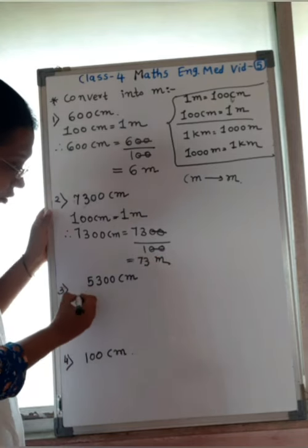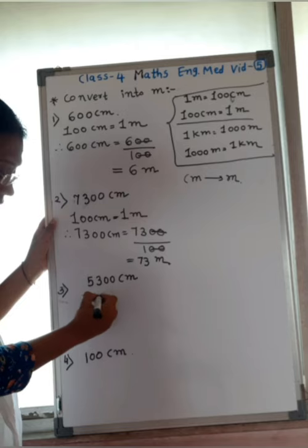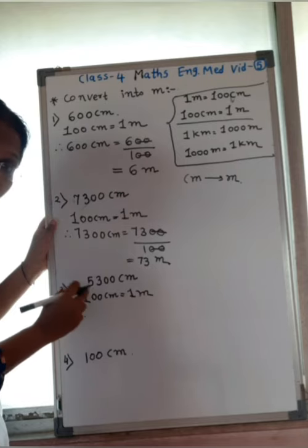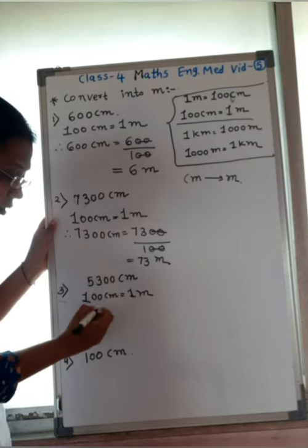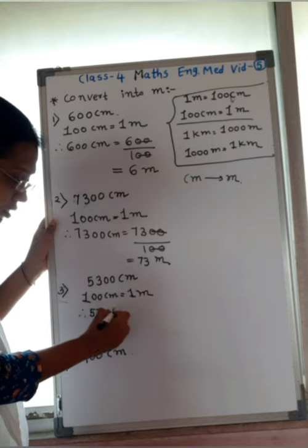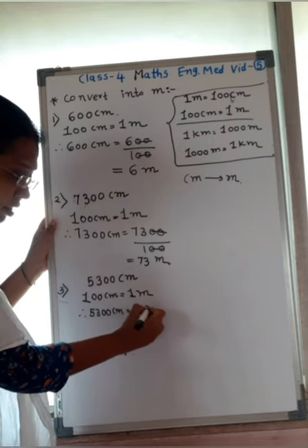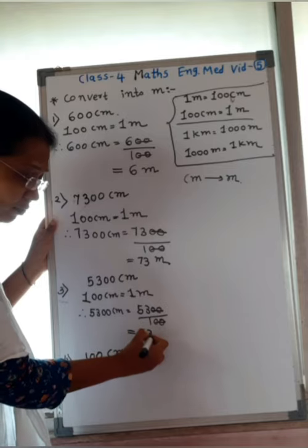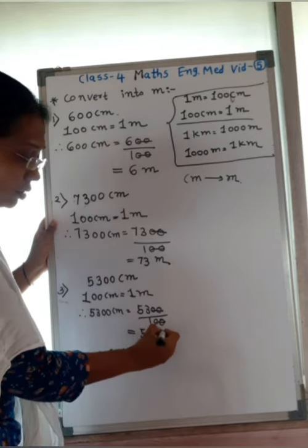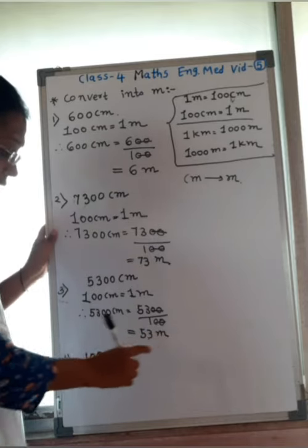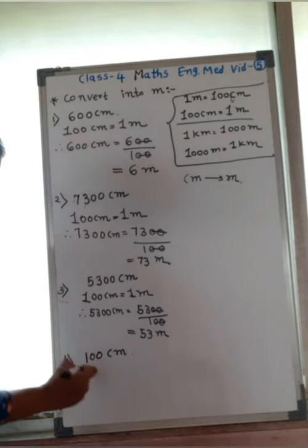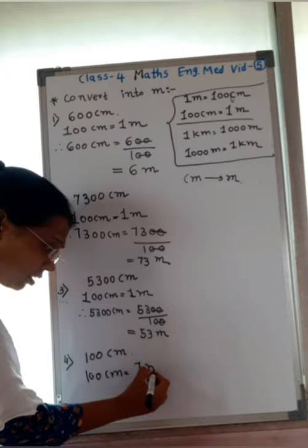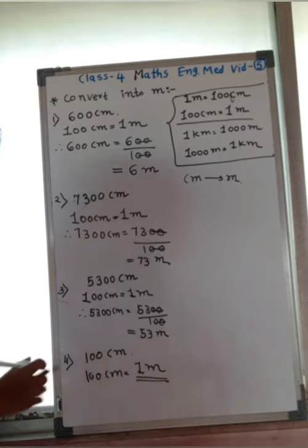Now 5,300 centimeter — can you help me solve this? 100 centimeter equals 1 meter. So, 5,300 centimeter equals 5,300 upon 100. The two zeros cancel, so the answer is 53 meter. Write the unit 'meter' — it is compulsory. The last question is 100 centimeter. We know 100 centimeter equals 1 meter, so the answer is 1 meter.